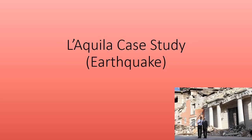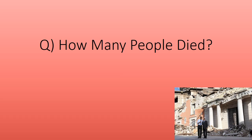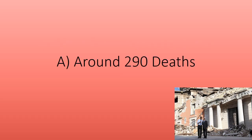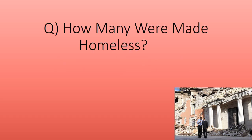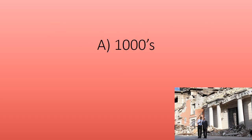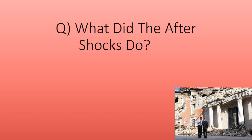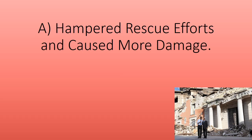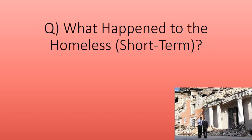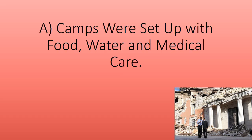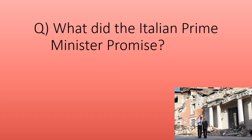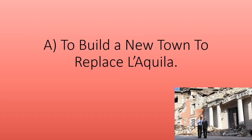The L'Aquila earthquake case study. How many people died? Around 290 deaths. How many were made homeless? Thousands. What did the aftershocks do? Hampered rescue efforts and caused more damage. Camps were set up with food, water, and medical care. The Italian Prime Minister promised to build a new town to replace L'Aquila.